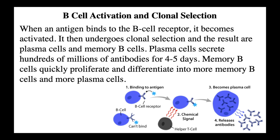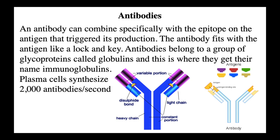When an antigen binds to the B-cell receptor, it becomes activated, undergoes clonal selection, and the results are plasma cells and memory B-cells. Plasma cells secrete hundreds of millions of antibodies for four to five days. Memory B-cells quickly proliferate and differentiate into more memory B-cells and more plasma cells. Antibodies combine specifically with the epitope on the antigen that triggered their production — the antibody fits with the antigen like a lock and key. Antibodies belong to a group of glycoproteins called globulins, which is where they get their name: immunoglobulins. These plasma cells can synthesize 2,000 antibodies per second.